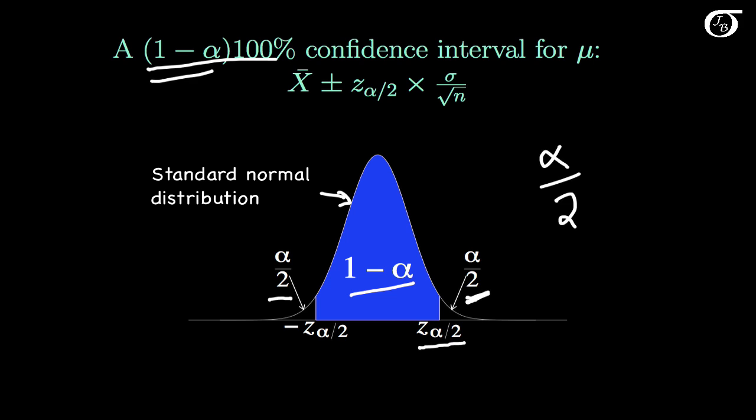And for any given confidence level, we're going to have to find the appropriate z value from the standard normal distribution to use in our confidence interval formula.